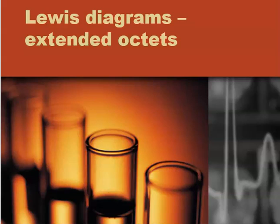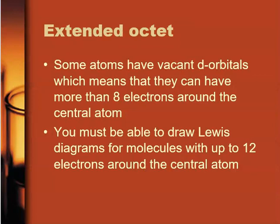Hi everyone, today I'm going to be talking about how to draw Lewis diagrams with extended octets. My previous video looked at how to draw simple Lewis diagrams. This is more what you will be asked to do for level three. In the previous lessons, when you learned how to do Lewis diagrams, you've always assumed that the central atom should have eight electrons on it.